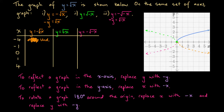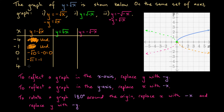At x equals 0 for the orange function: y equals minus the square root of 0, which is minus 0, so y equals 0. At x equals 1: y equals minus the square root of 1, which is minus 1. At x equals 4: y equals minus the square root of 4, and the square root of 4 is 2, so y equals minus 2.